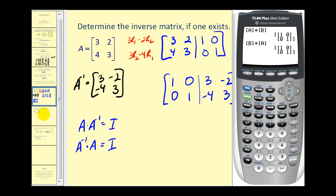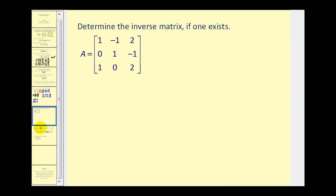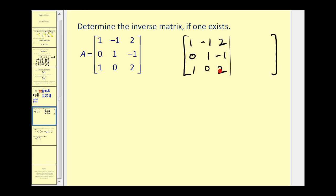Now let's see if we can find a 3 by 3 inverse matrix. We're going to have a 3 by 6 augmented matrix, with matrix A on the left and the identity matrix on the right. We want the matrix on the left to become the identity matrix — these three elements to be zero, these three to be zero, and the main diagonal to be ones.